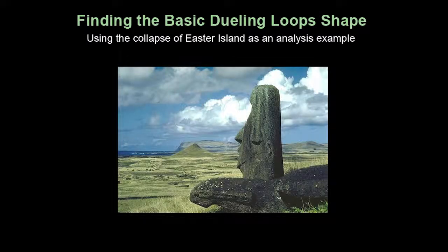The collapse of Easter Island is a well-studied case of collapse. This photo shows two of the 887 statues on the island, though only 288 were successfully moved from quarry to erection site. The photo also shows a totally deforested island for as far as the eye can see.